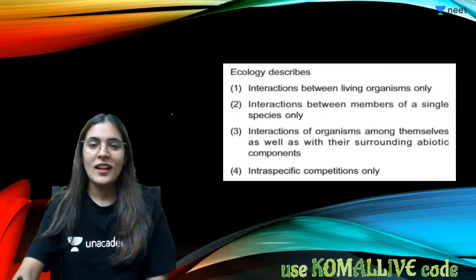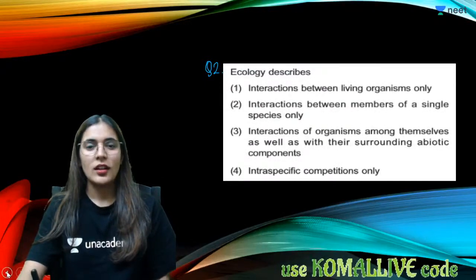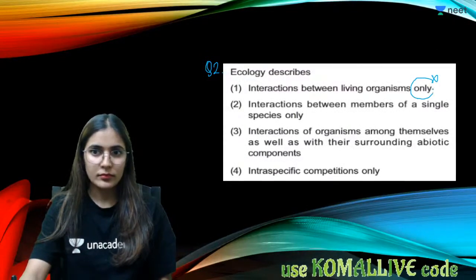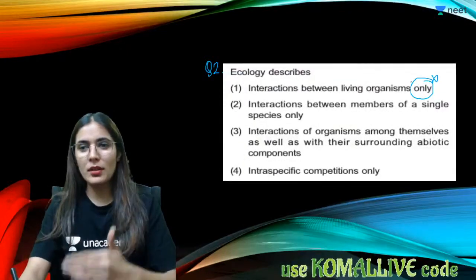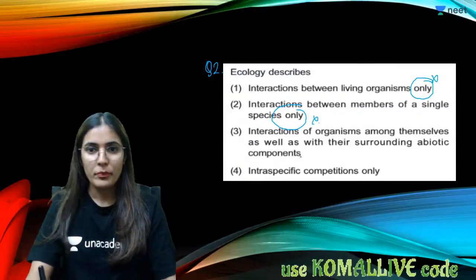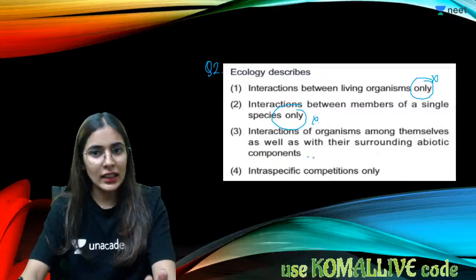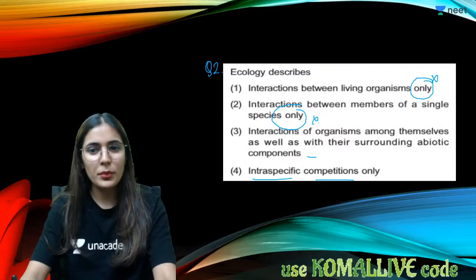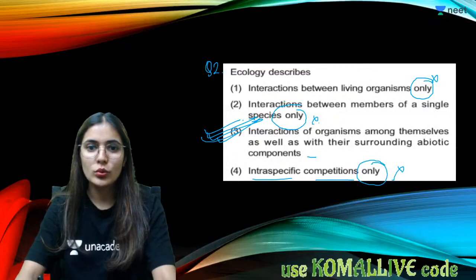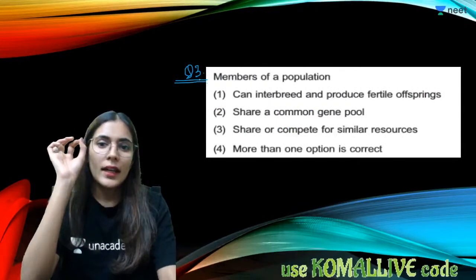Question number two: ecology describes — the correct answer is option three — interaction of organisms among themselves as well as their surrounding abiotic factors. It is not just interaction between living organisms only, nor between members of a single species only, nor only intraspecific competition.